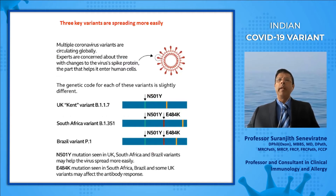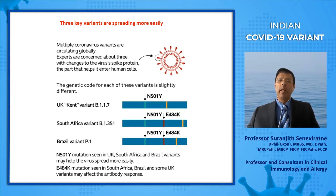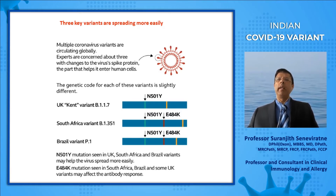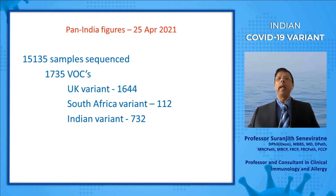If you look at the variants circulating around the world, you have variants of concern and variants of interest. Three important variants are circulating: the UK variant or Kent variant, the South African variant, and the Brazilian variant. You can see there are similar changes in all three variants at N501Y — that is an important mutation in all three. Two of the variants also have the E484K mutation. The N501Y increases viral transmission, while the E484K mutation can affect vaccine immunity and neutralization. These variants are found circulating worldwide, including in India.